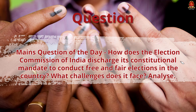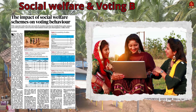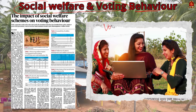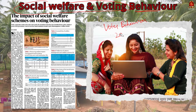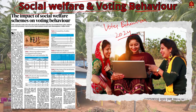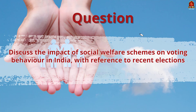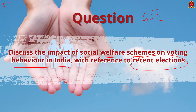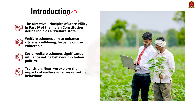The next article highlights the significant role social welfare schemes have played in influencing voter behavior in India, particularly in the 2024 elections. This topic is relevant for GS Paper 2. The question is: 'Discuss the impact of social welfare schemes on voter behavior in India with reference to recent elections.' Since the keyword is 'discuss,' you are expected to give various perspectives with supporting data — present your views, then opposing views, and conclude with a balanced view. In the introduction, you can write that according to the Directive Principles of State Policy outlined in Part 4 of the Indian Constitution, India is a welfare state, and welfare schemes aim to improve the well-being and quality of life for citizens, often focusing on vulnerable or disadvantaged populations.